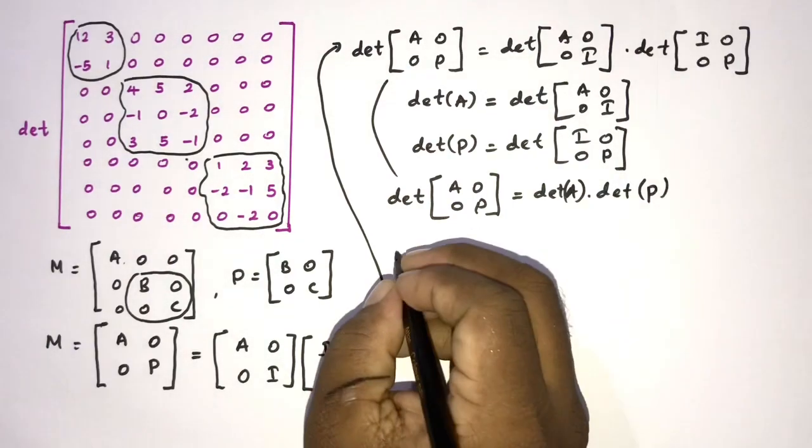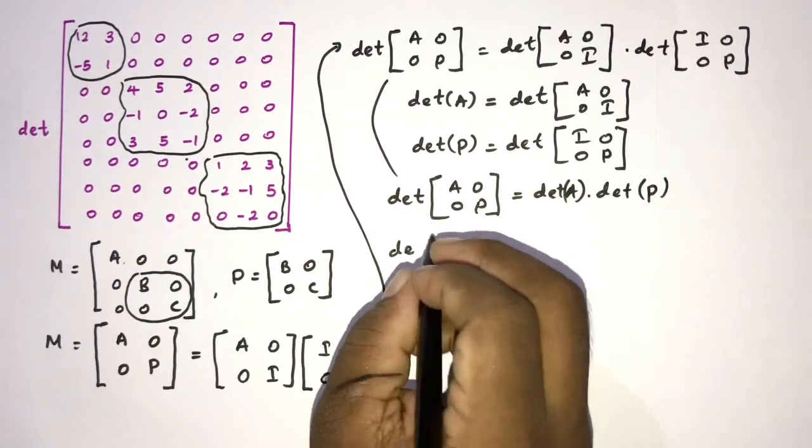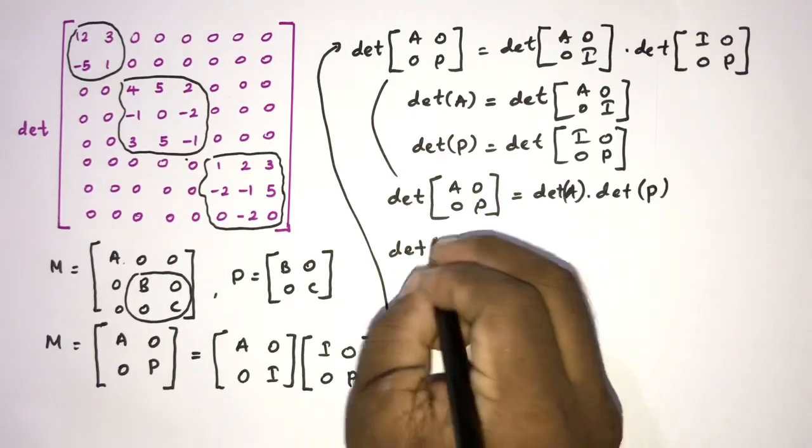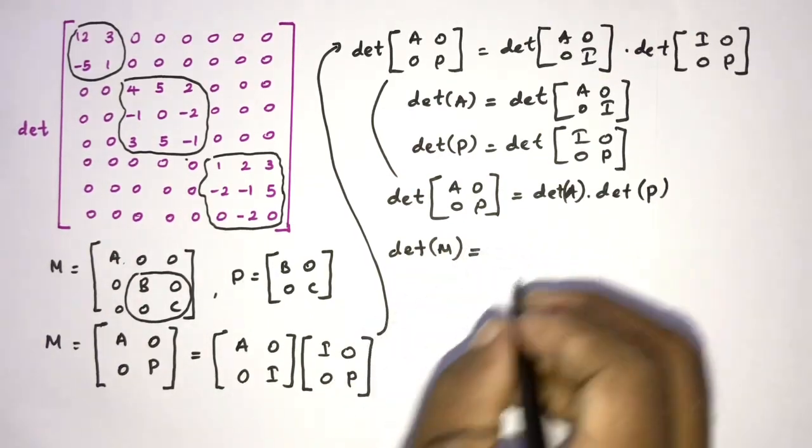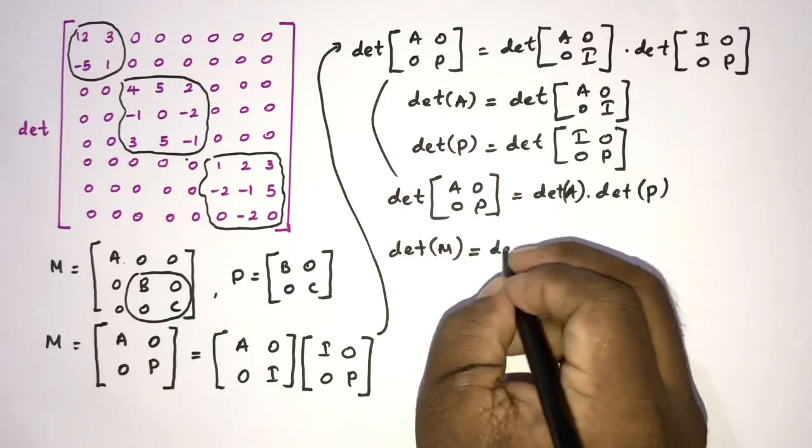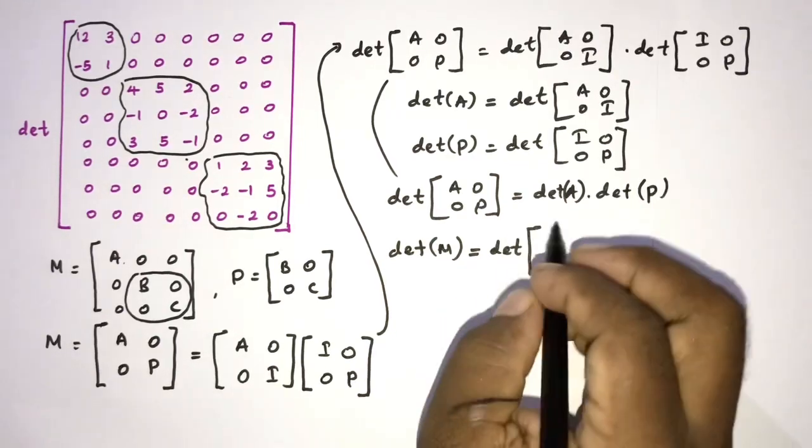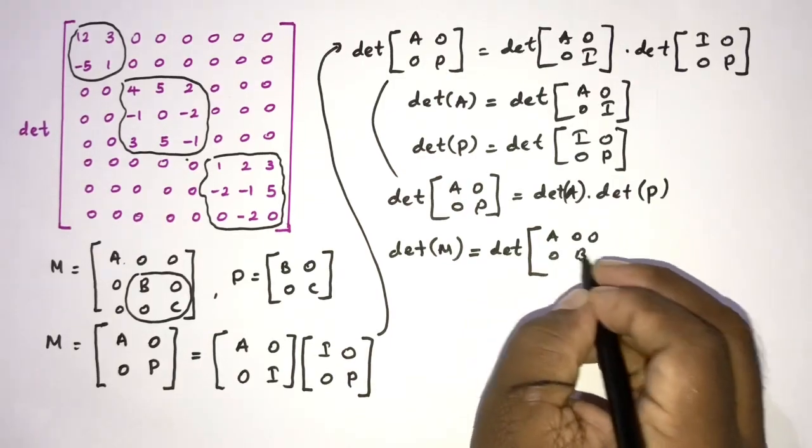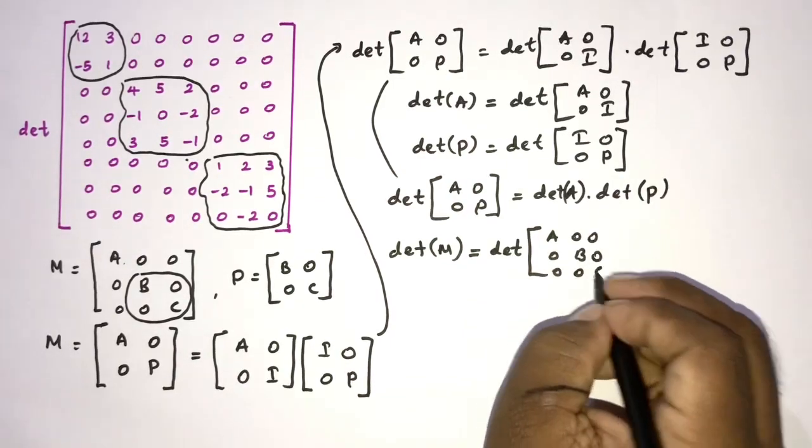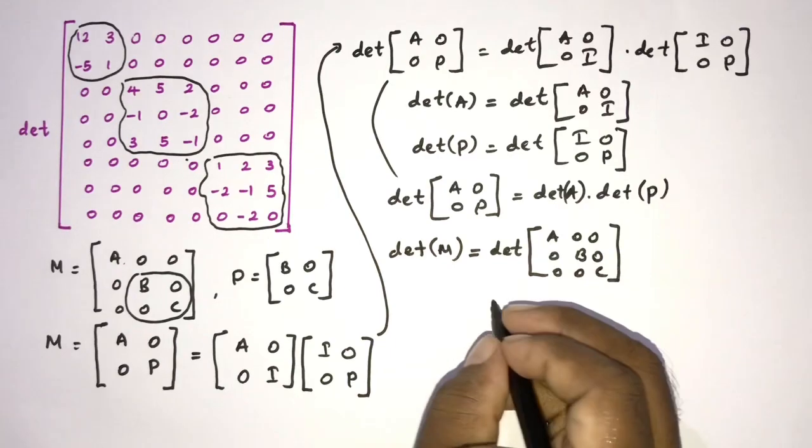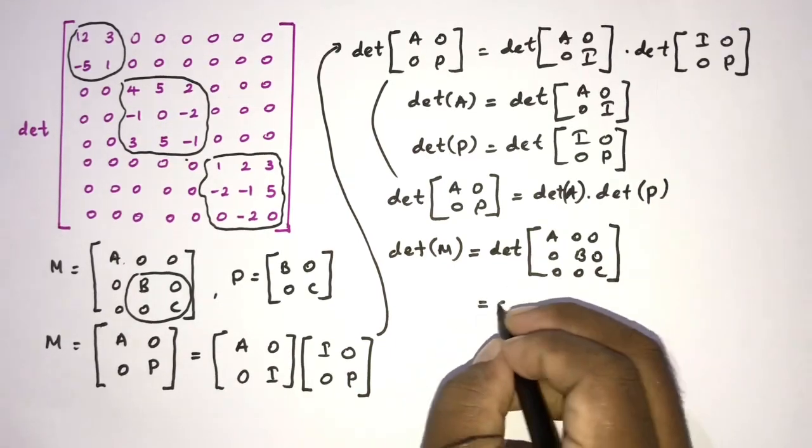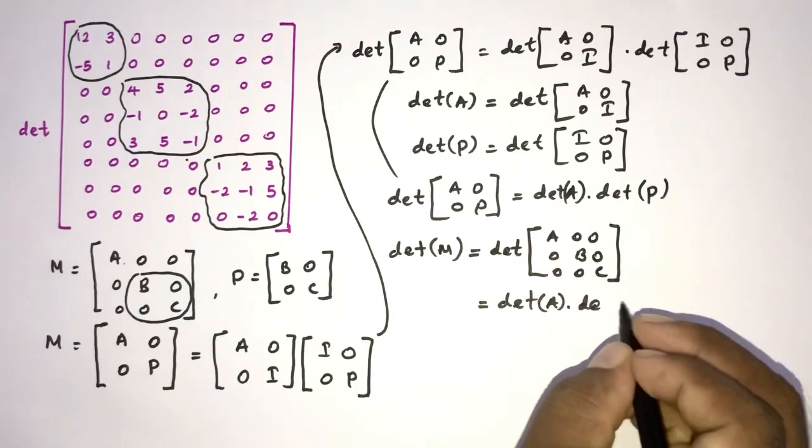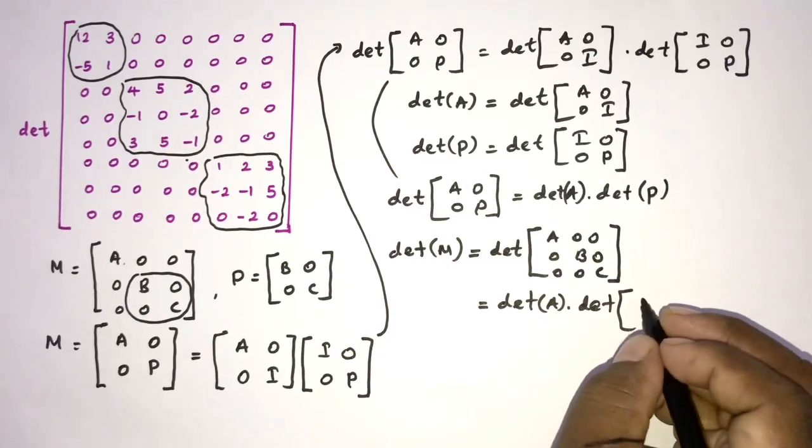So we can write our main matrix det M is equal to determinant of here A, 0, 0, 0, B, 0, 0, 0, C.